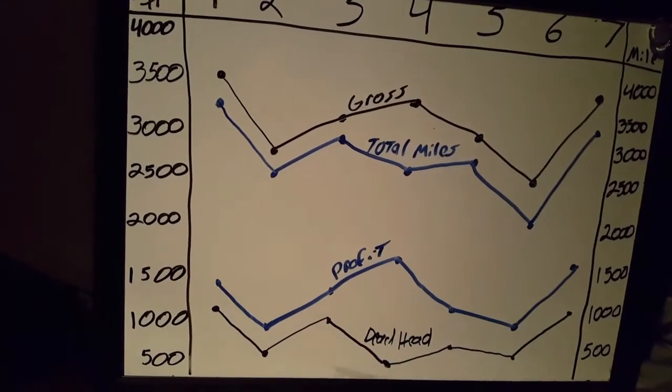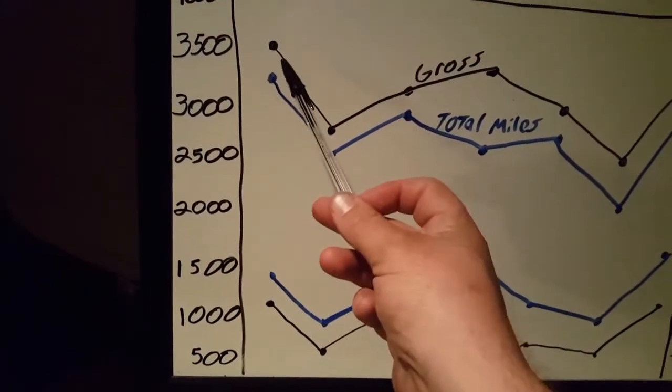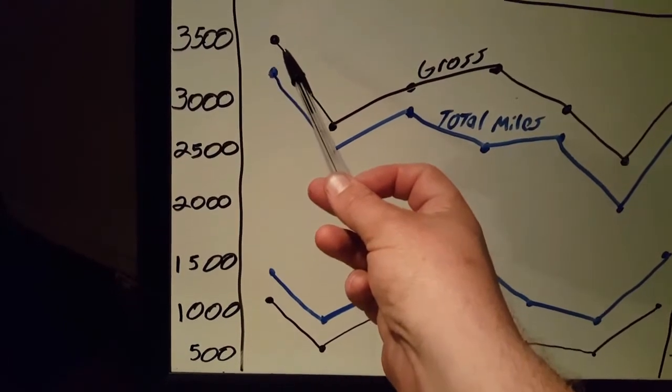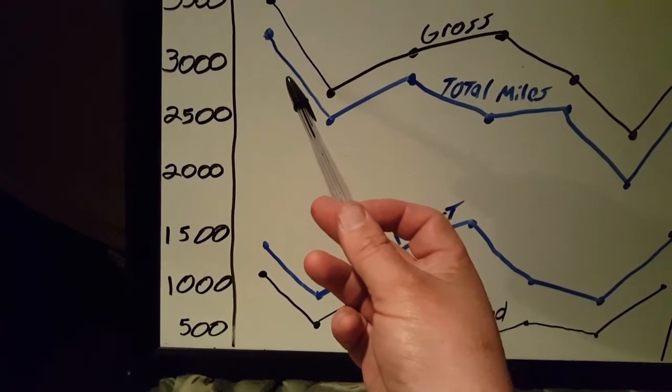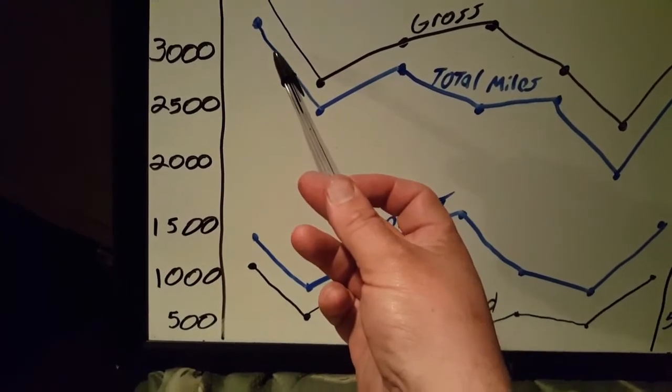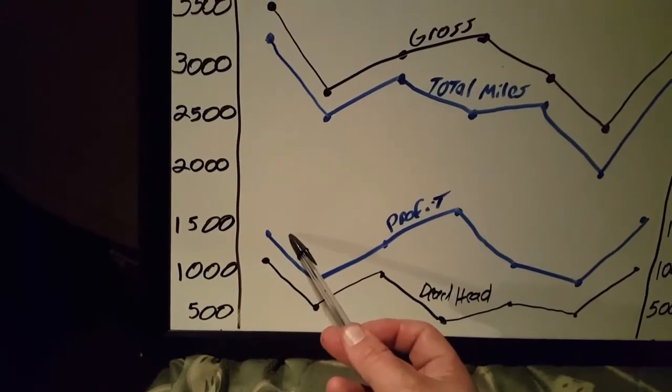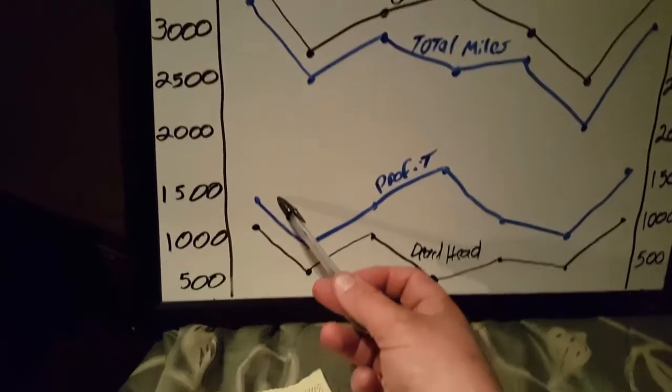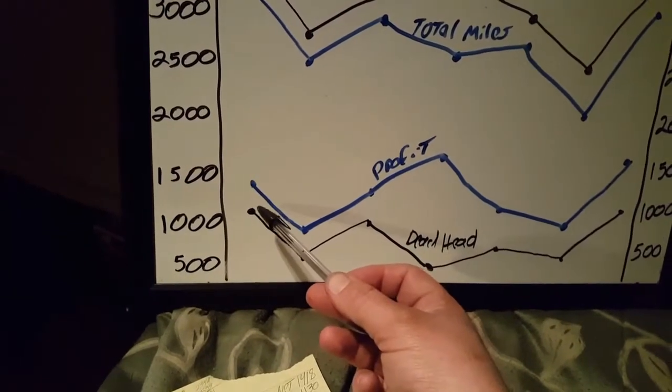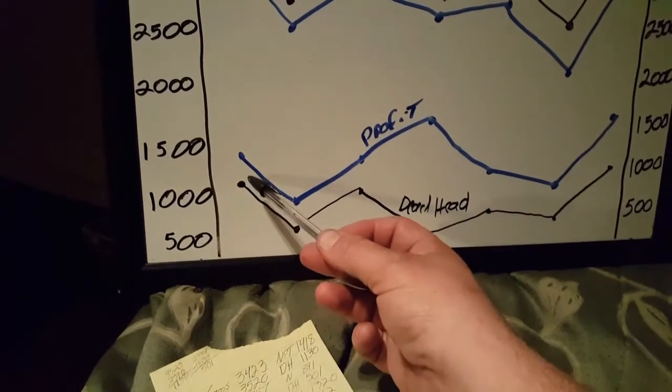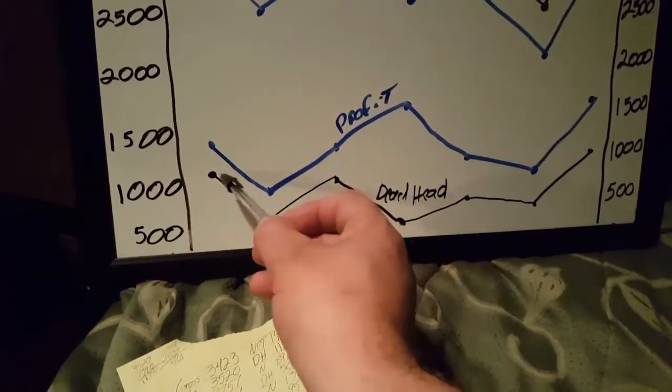Week one was $3,423 on the gross, we had $3,520 on the total miles, $1,421 on the profit, and $1,130 on the deadhead.